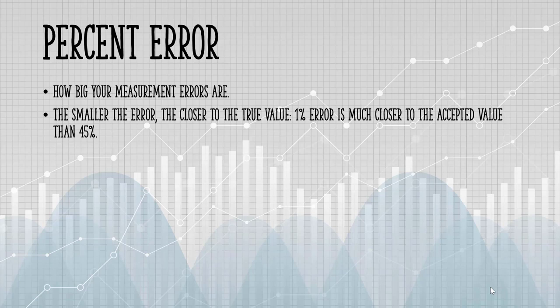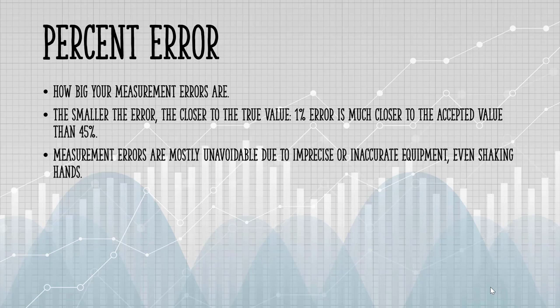For example, a 1% error means you got very close to the accepted value, while 45% means you are quite a long way off from the true value.